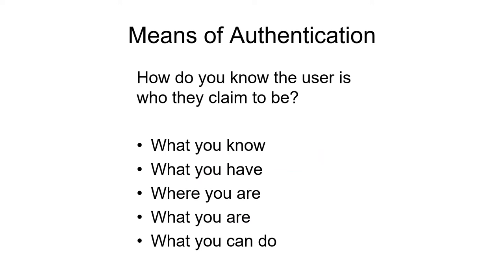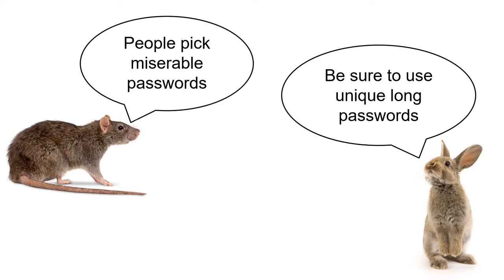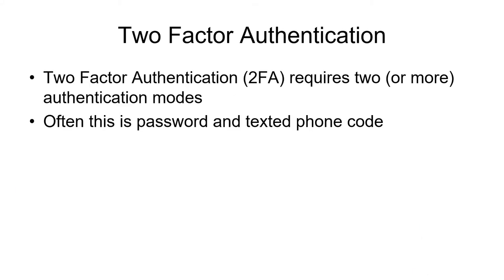Let's think about how to authenticate yourself to any web system or program. There are several ways, based on: what you know, such as passwords; what you have, such as an identification card; where you are — your location; what you are — biometrics; and what you can do. Two-factor authentication is becoming very common. It requires two or more authentication modes — commonly, you type a password and then the system texts you a code on your phone, which you then type in. That way you prove something you know, the password, and something you have, your phone.